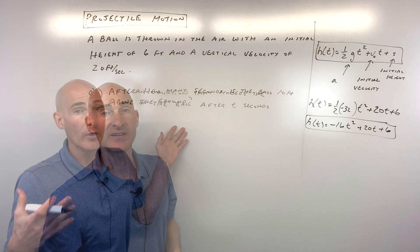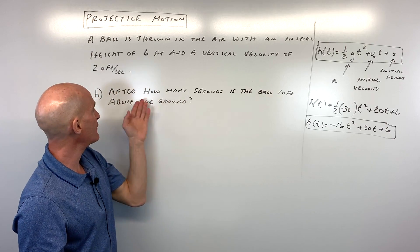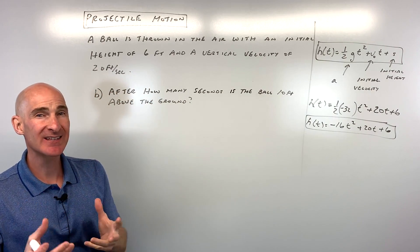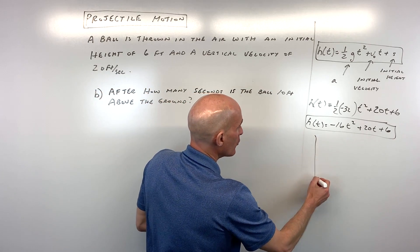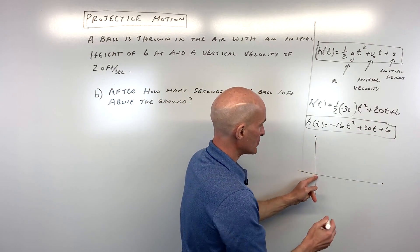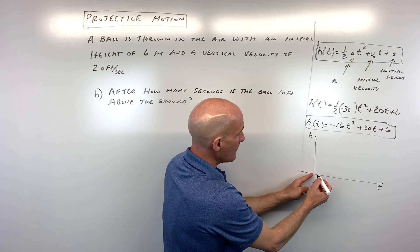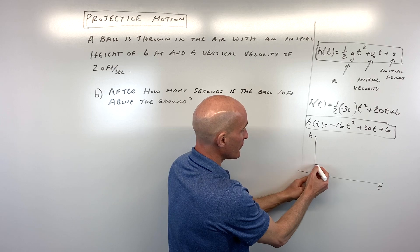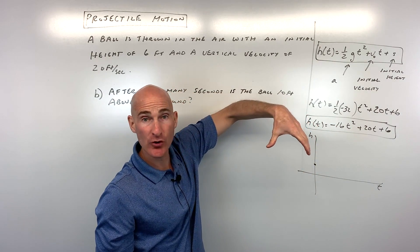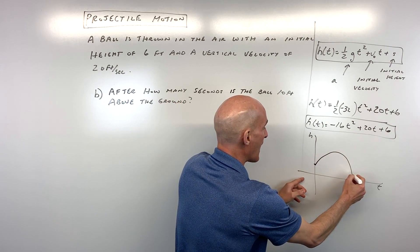Now part B says: after how many seconds is the ball ten feet above the ground? Let's draw a picture to get a sense of what's happening. At time zero the x-axis represents time and the y-axis represents height. We're not throwing it from the ground — we're throwing it from six feet above the ground. Notice the a value is negative, so the parabola opens downward.